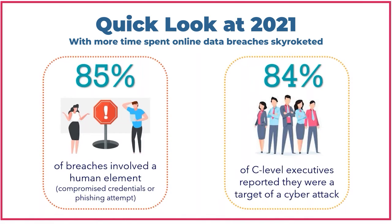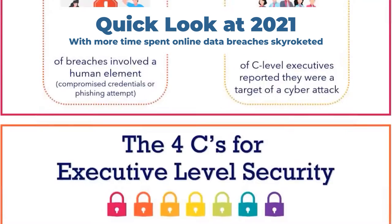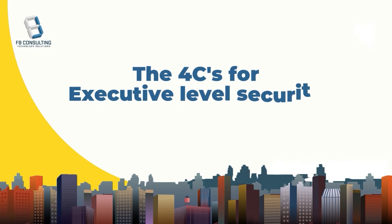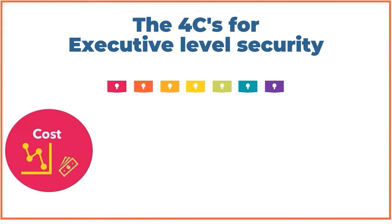So let's see what measures we can take to better secure our network. We'll break it down into the four C's of executive level security, which are: Costs — this includes a risk analysis and identifying key members of your organization, which will help you budget to provide those extra layers of security.